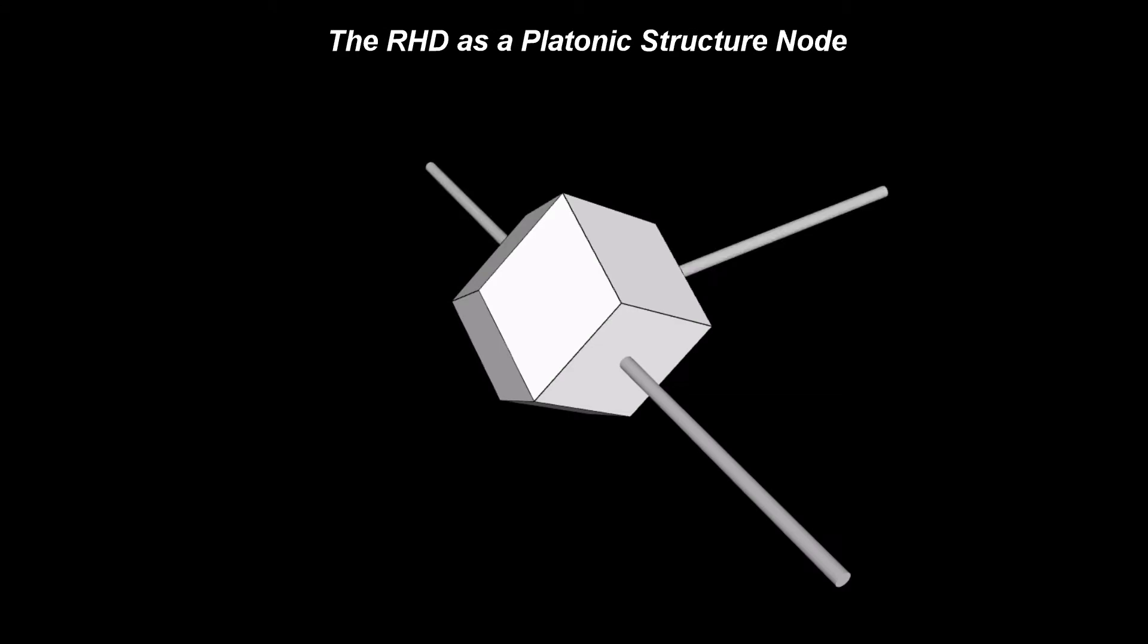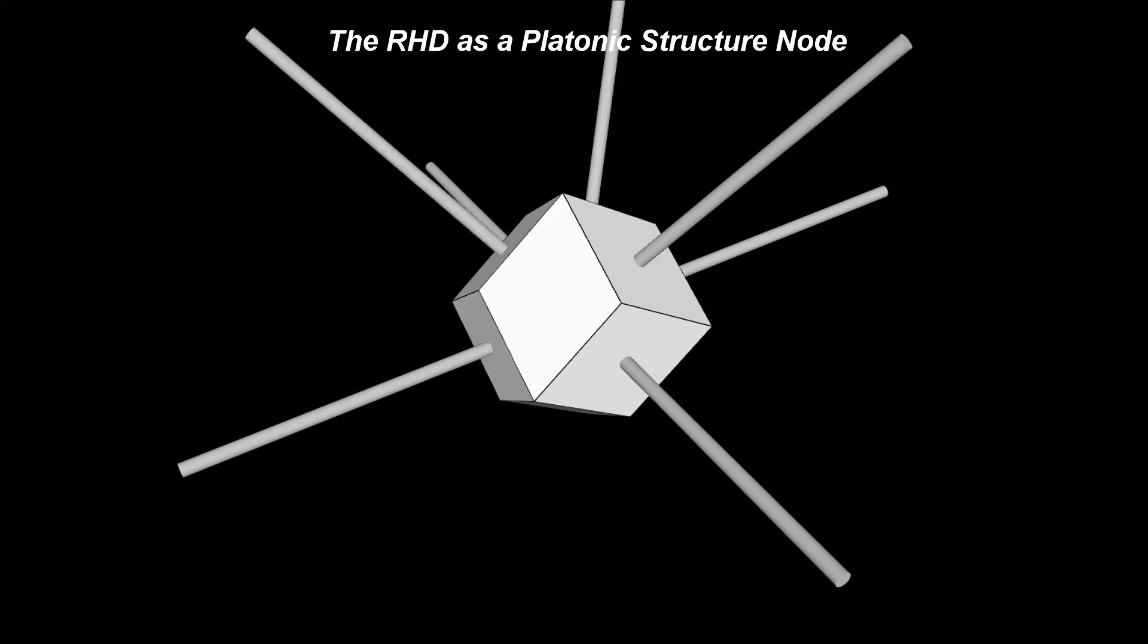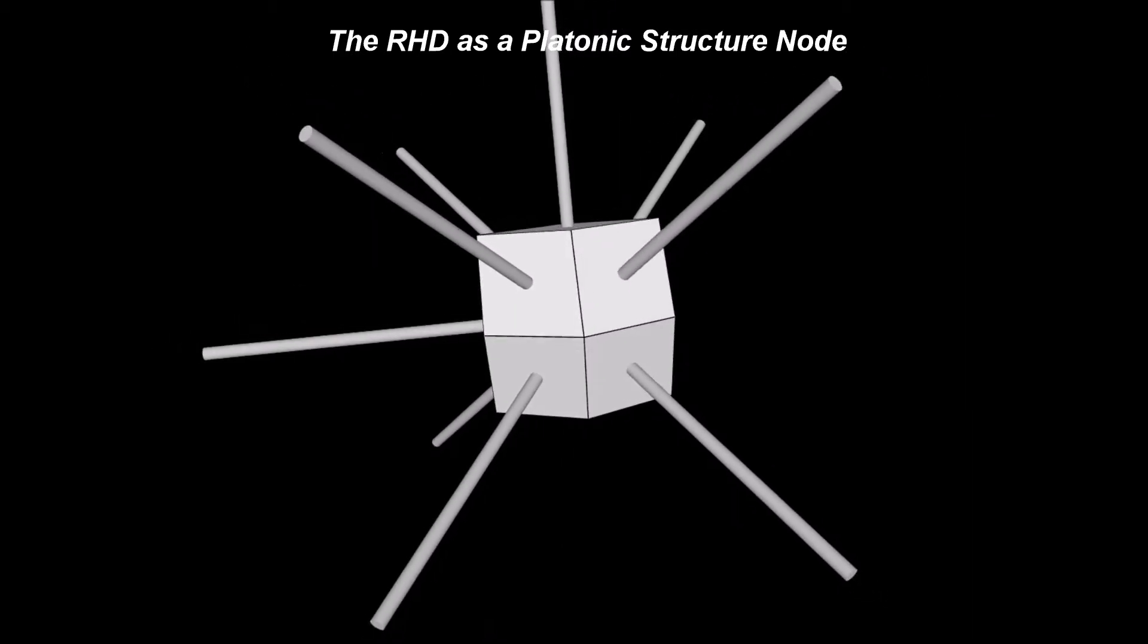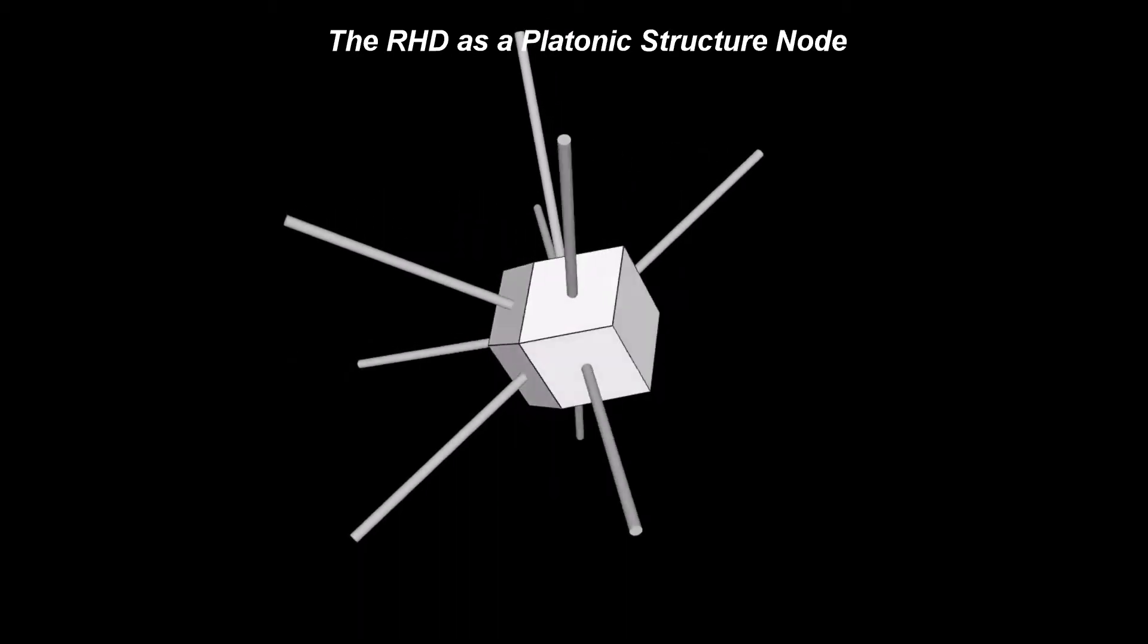This shape is used as one possible node that can replace the sphere in the CPS arrangement. It provides better visualization for the directions of connections between neighboring nodes. This shape is the preferred node used to assemble platonic structures.